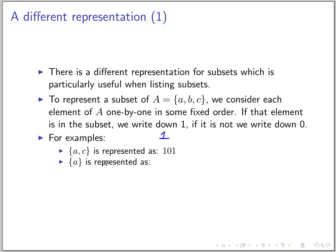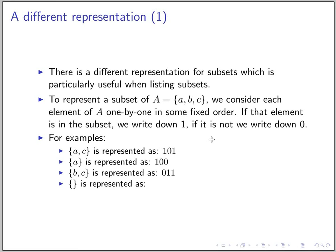For subset {a}: a is in so we write 1, b is not so we write 0, c is not so we write 0 — giving 1 0 0. For {b, c}: a is not, b is in, c is in — giving 0 1 1. For the empty set, nothing is in, so you get 0 0 0. Note that we need to fix the ordering of the elements of the set; otherwise when we see 0 1 1 we wouldn't know what the first element is. So we say the first element is a, the second is b, and so on.